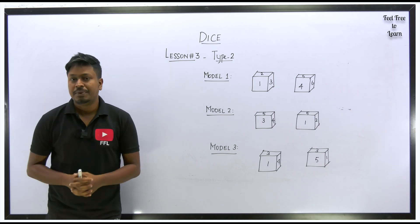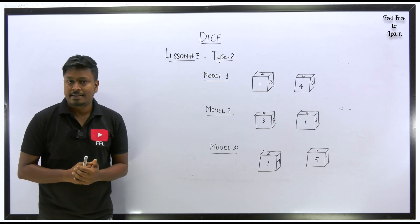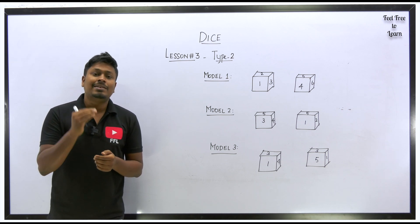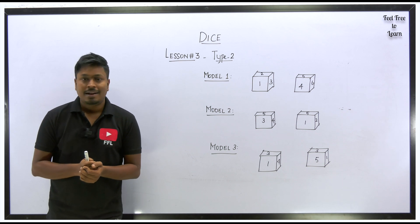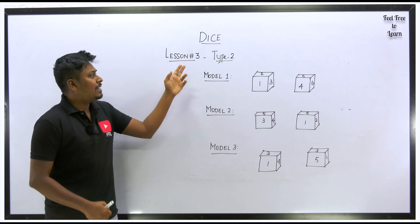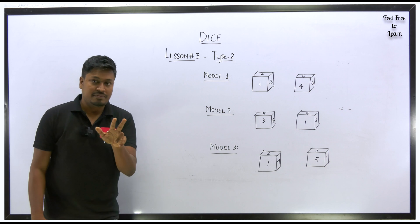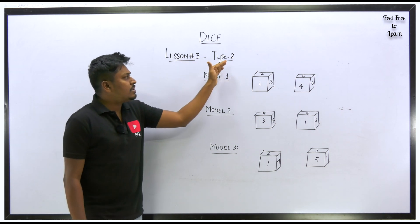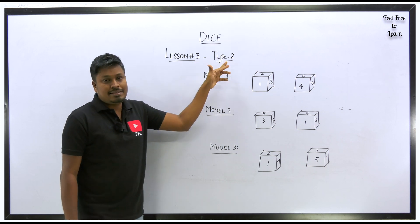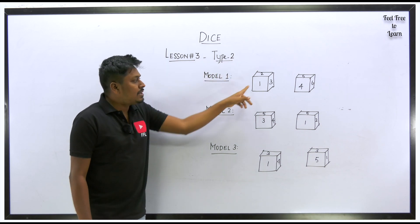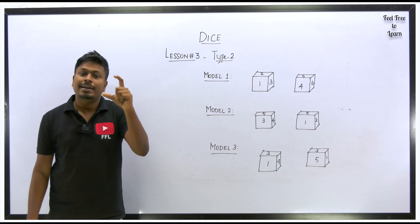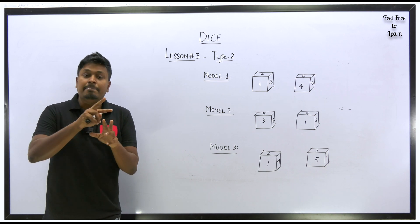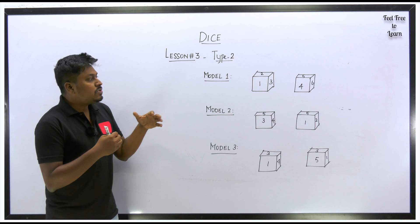Welcome to lesson number three on the topic of dice. We are going to solve questions from Type 2. Before watching this, always learn all previous lessons and be strong on the basics. In lesson 1 we covered the introduction of dice — standard dice and general dice. In lesson 2 we solved Type 1 questions based on a single diagram. Here in Type 2, they will give two diagrams and we have to solve the question based on both.